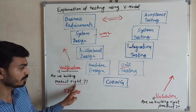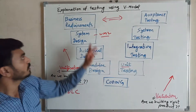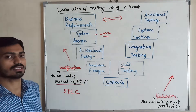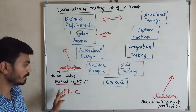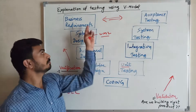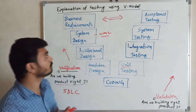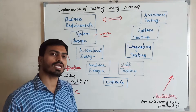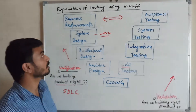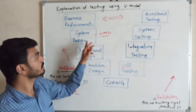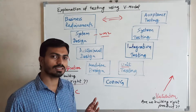Validation asks: 'Are we building the right products?' In Verification, there are simple processes in the software development cycle we follow. First, we collect business requirements using elicitation techniques. Second is system design, architecture design, and module design — three different types of design.